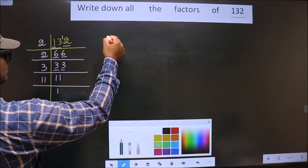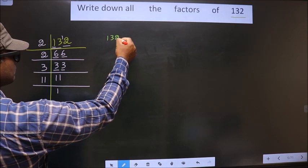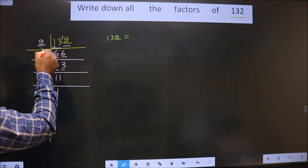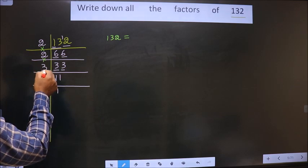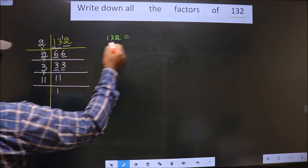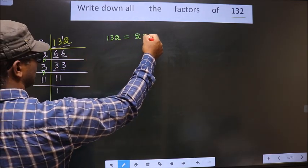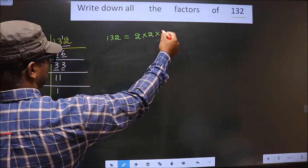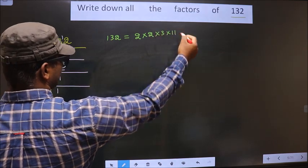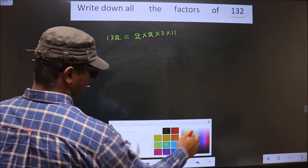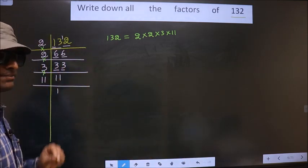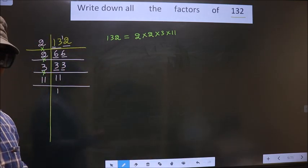So now 132 is nothing but the product of these numbers. That is 2 times 2 times 3 times 11. Am I clear so far?